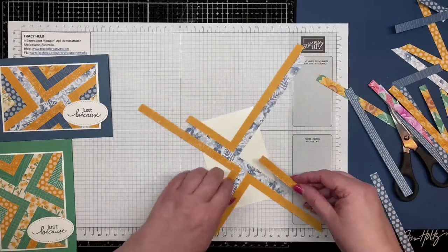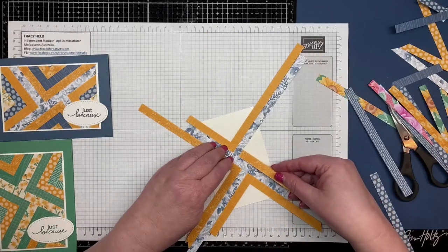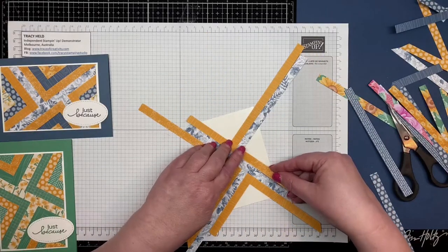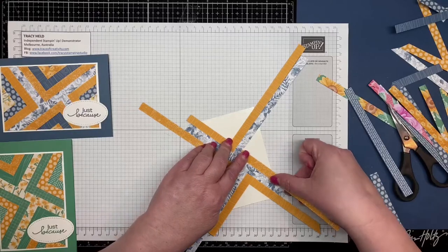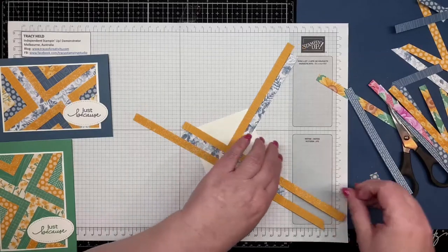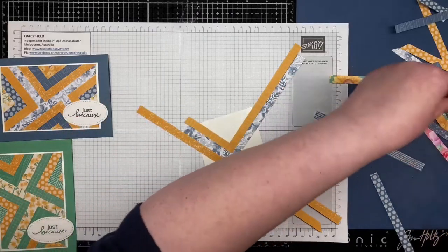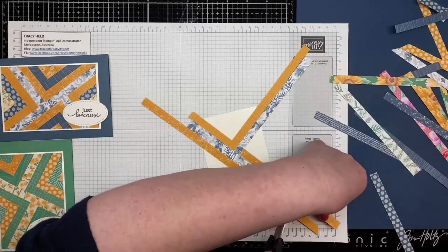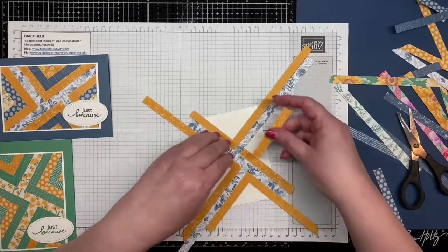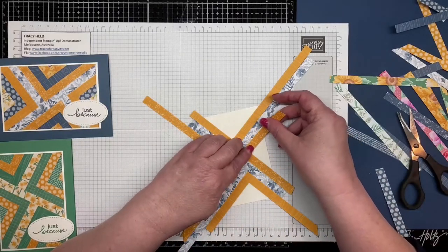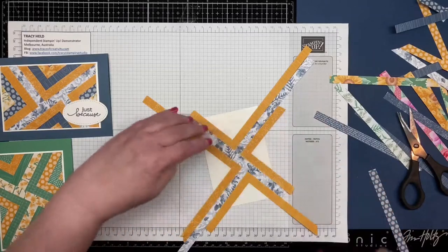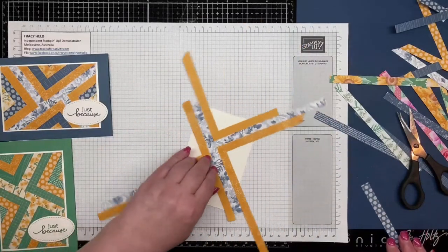And the only thing that I'm paying attention to is that my strips are as close as I can get them, right next to each other. And you can either work with full strips or you can cut the lengths off and use those lengths.